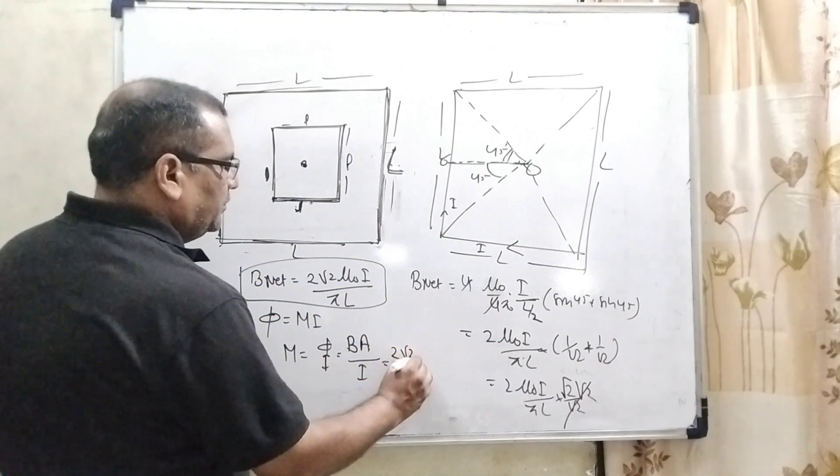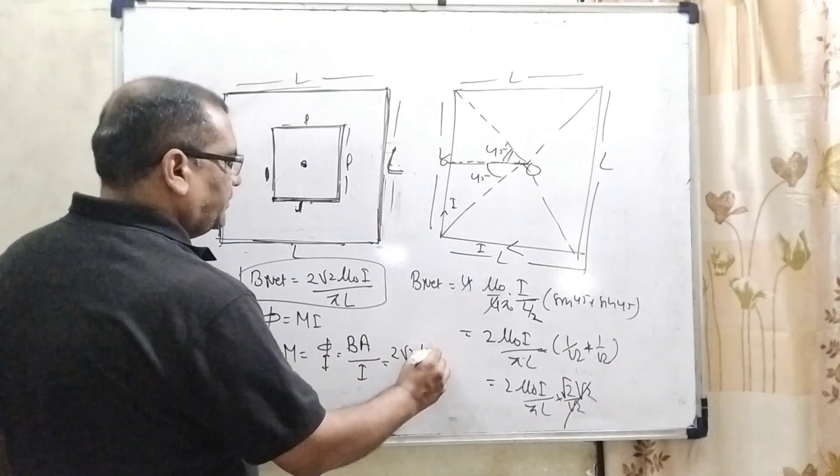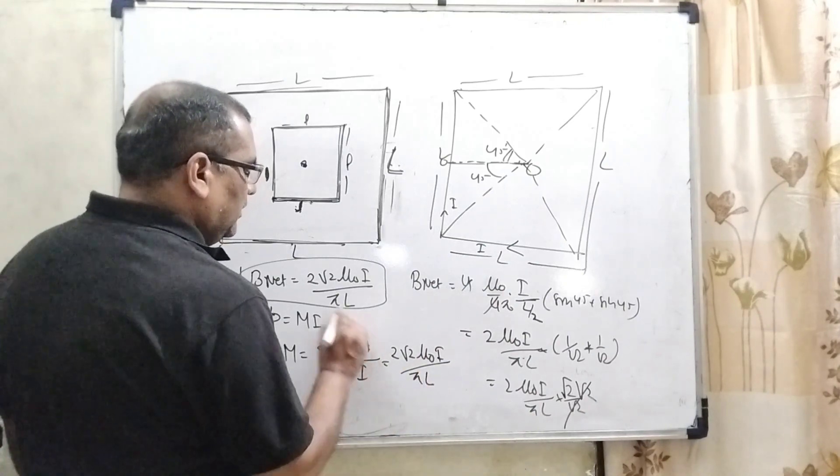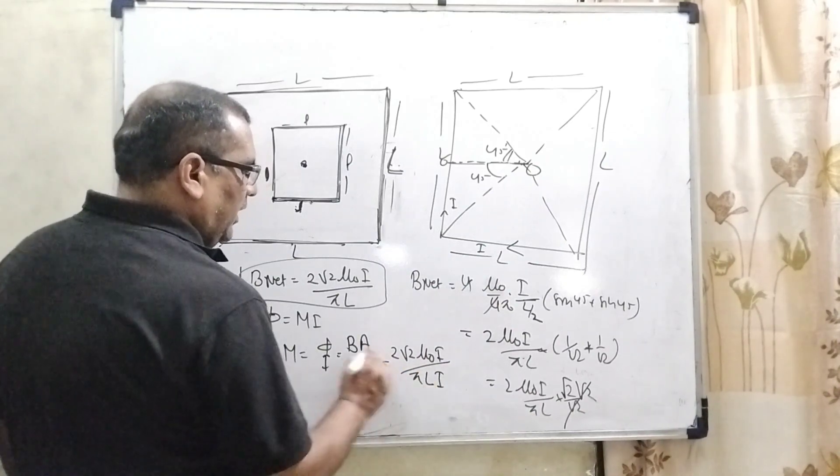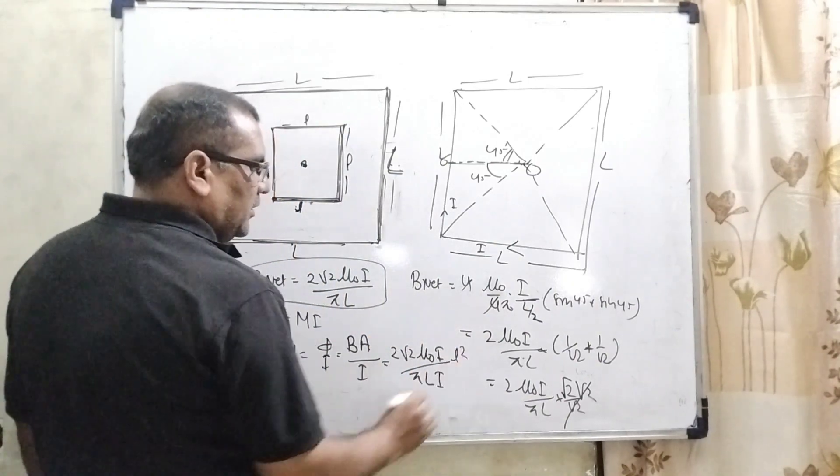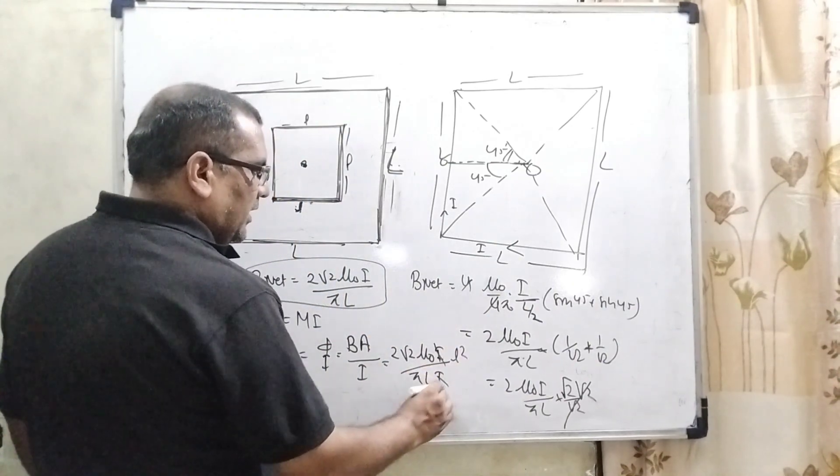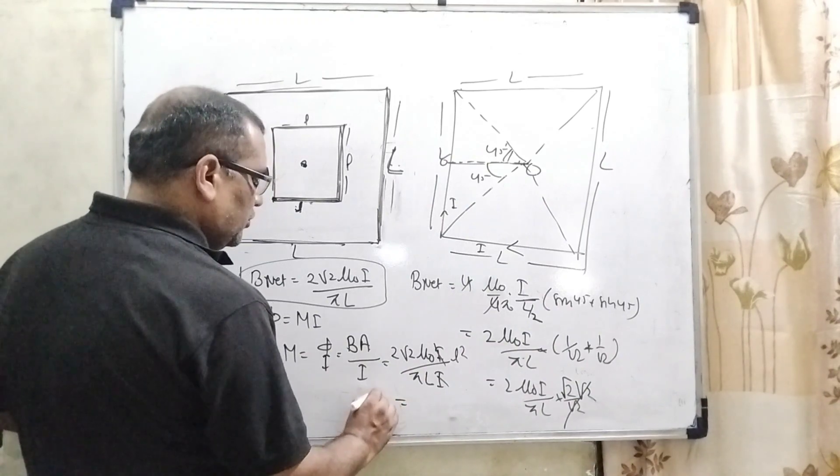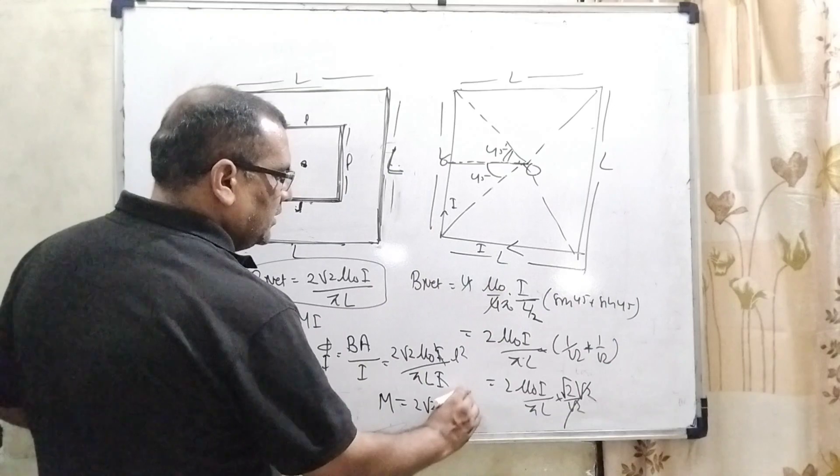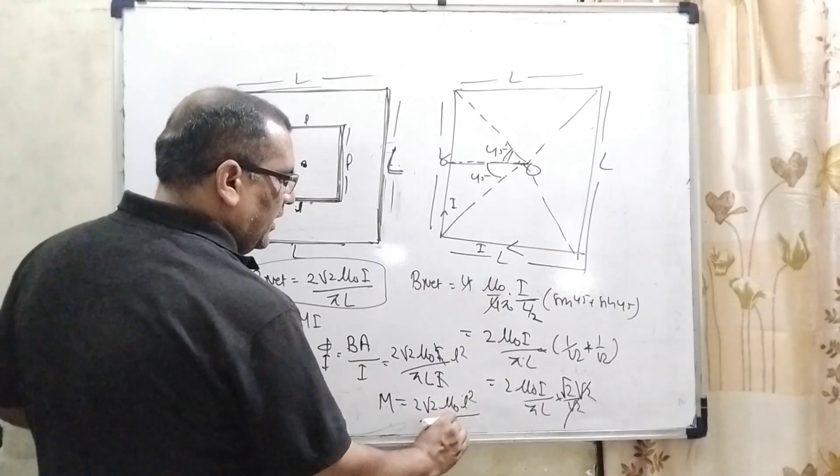So here 2 root 2 mu0 I upon pi L, and area of the small square loop that is small L square. So here I, I cancel out.